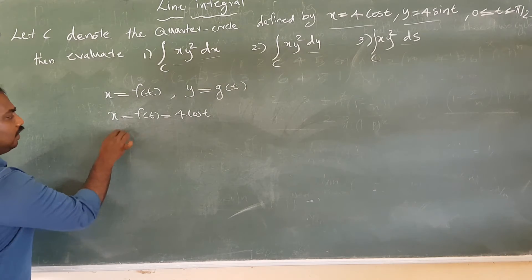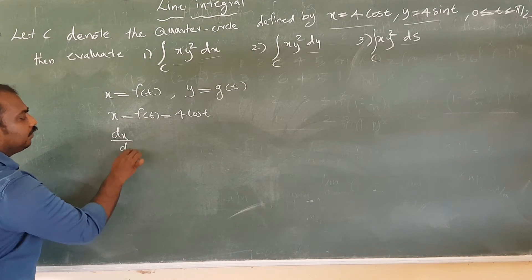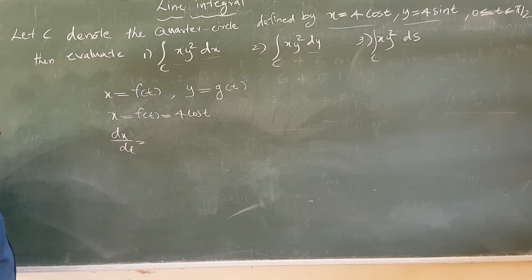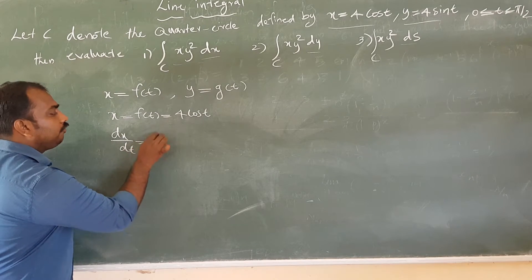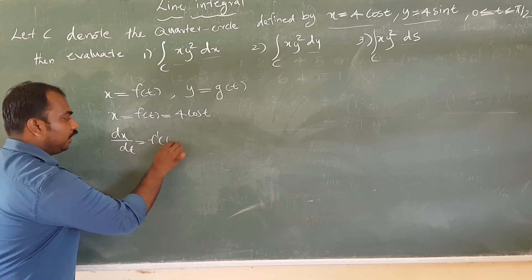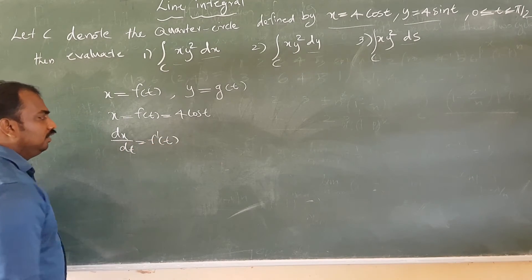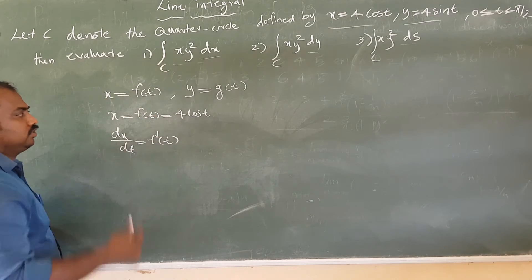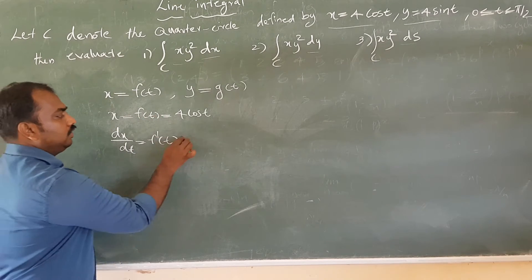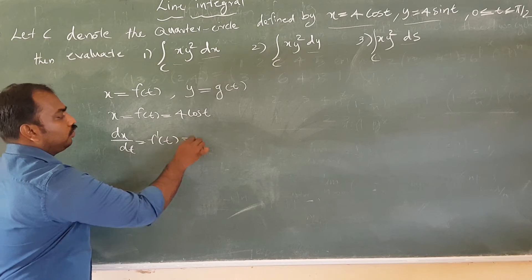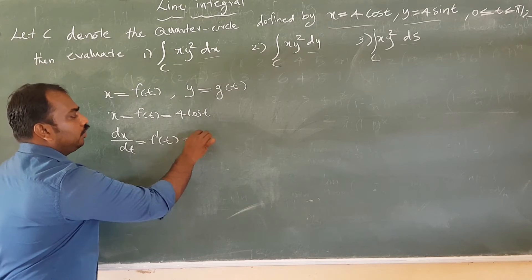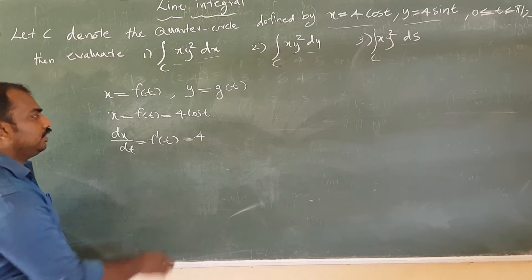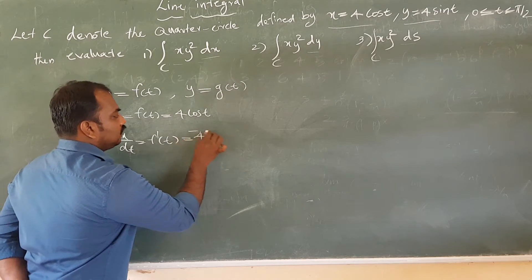Then dx/dt is equal to F'(t). So dx is equal to F'(t) dt, which is the derivative of 4 cos t — that is minus 4 sin t.